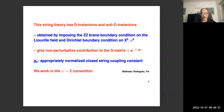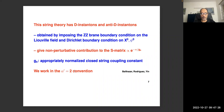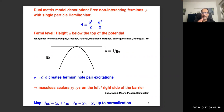This string theory has D-instantons and anti-D-instantons, obtained by imposing the ZZ-brane boundary condition on the Liouville field — the analog of the Dirichlet boundary condition on the Liouville direction — and also the standard Dirichlet boundary condition on X_0. These are finite action classical solutions giving non-perturbative contributions to the S-matrix proportional to e^(−π/g_s), so the constant C equals π. Throughout this talk we work in the α′ = 2 convention, which sets the string tension to 1/(2π), to compare results with existing matrix model calculations.